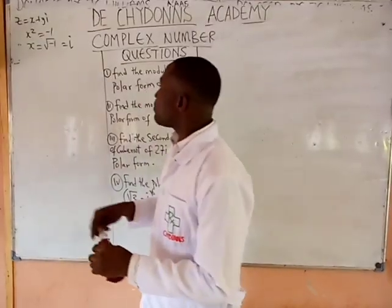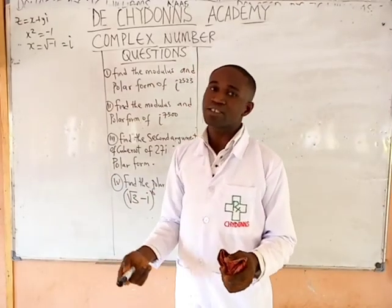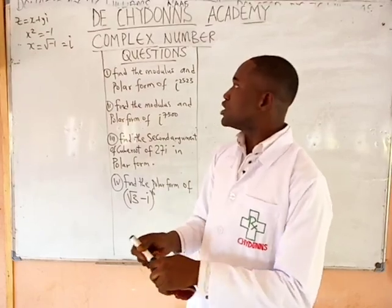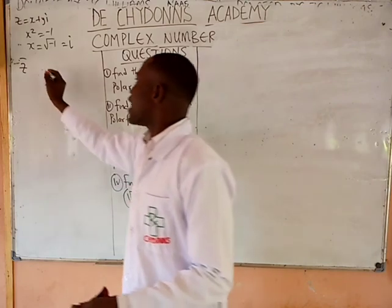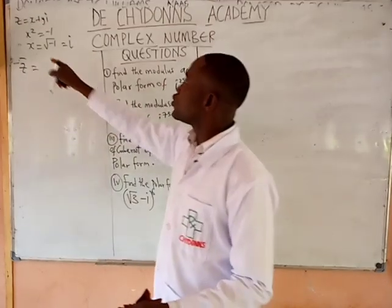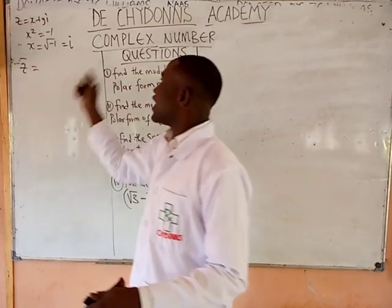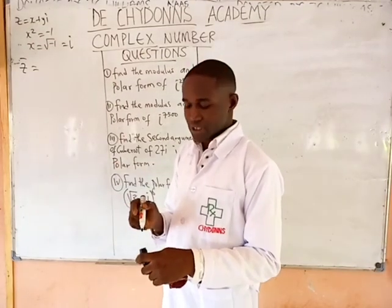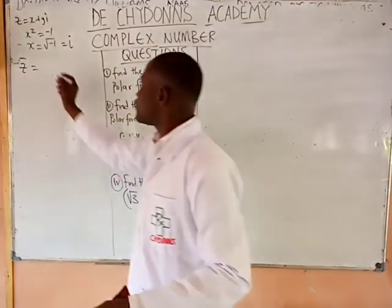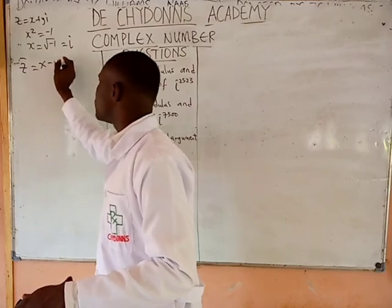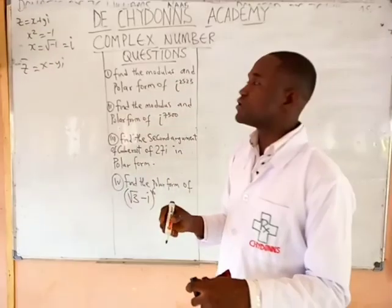Now, this complex number we are discussing has a conjugate. Conjugate simply means opposite. The conjugate of a complex number is noted as follows: go to the sign that is in between the real and the imaginary part and change it to the opposite. The sign here is plus, so the conjugate will change it to minus. This is the conjugate of this complex number.